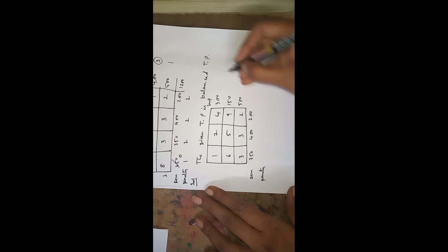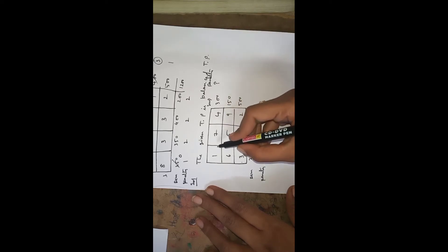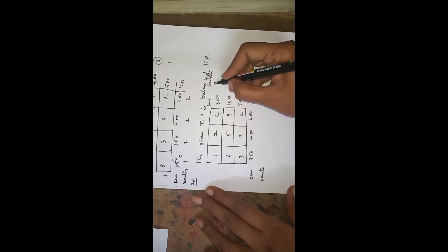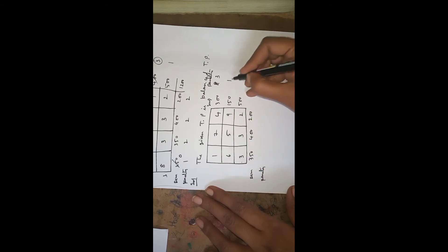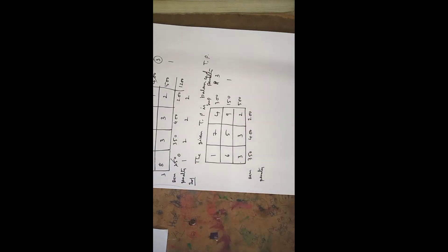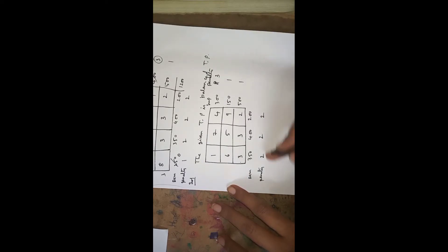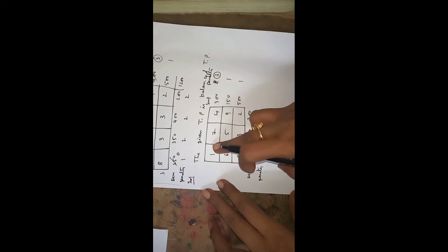Again we calculate penalties using the same method. In the first row, the difference between two least numbers 4 minus 1 is 3. For the second row, 6 and 5, difference is 1. Third row, 3 and 2, difference is 1. First column 1 and 3 is 2. Second column 5 and 3 is 2. Third column 4 and 2 is 2. Identify the highest penalty and circle it — the highest penalty occurs in the first row.